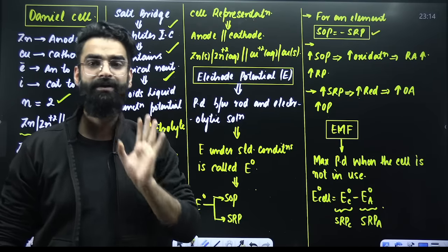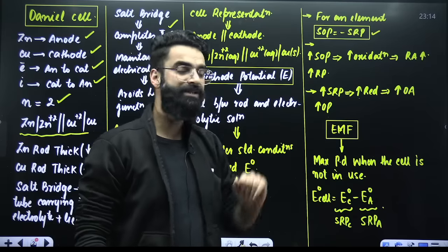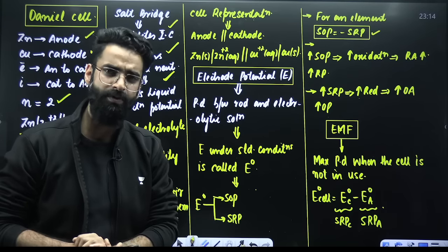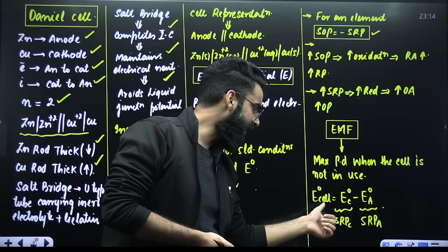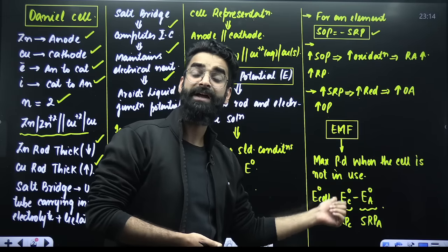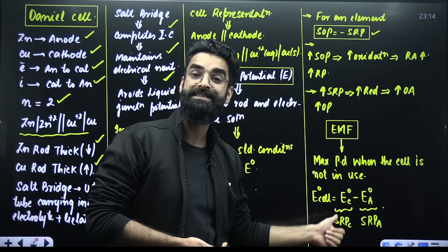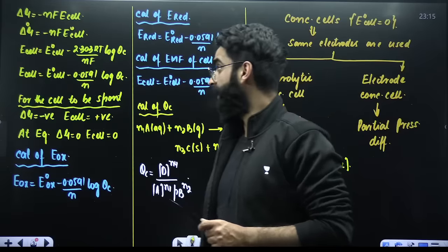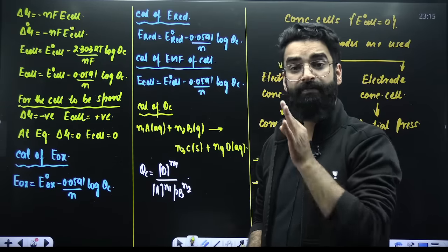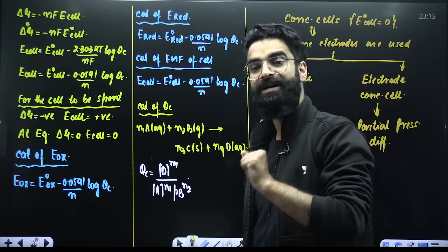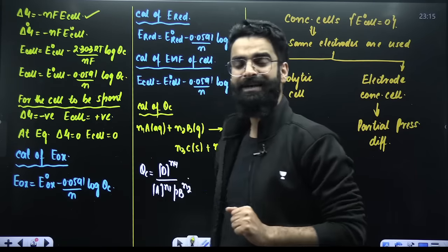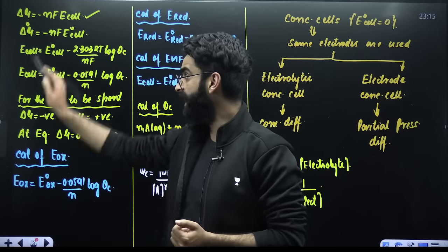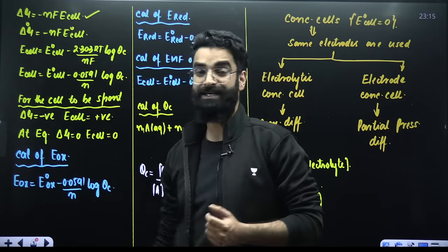The standard hydrogen electrode is taken as the reference electrode; both its SOP and SRP values are taken as zero. EMF is the maximum potential difference between the two electrodes when the cell is not in use. The standard EMF, E°cell, is calculated as E° of cathode minus E° of anode — where both values are the SRP values. There are key results to remember: Delta G for the cell equals −nFE_cell, where n is moles of electrons exchanged, F is Faraday's constant, and E_cell is the EMF.